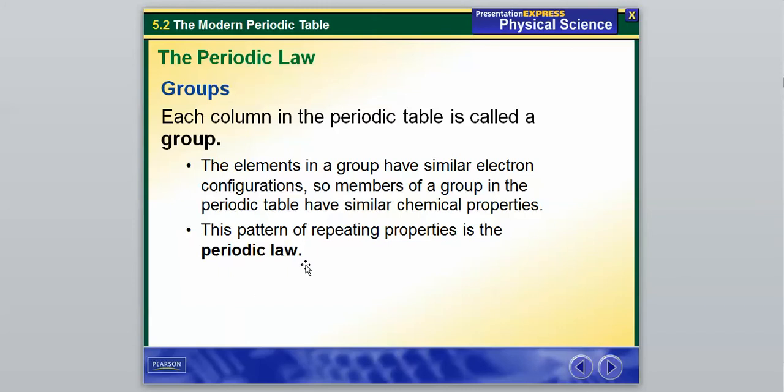And this pattern of repeating properties is known as a periodic law. So the fact that elements in a group where our columns are straight up and down have similar properties is because of their electron configuration, and this is known as a periodic law.